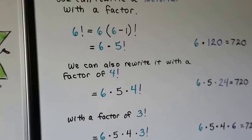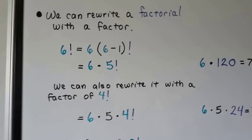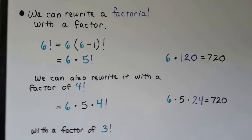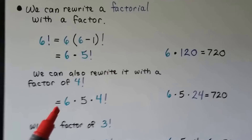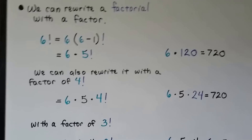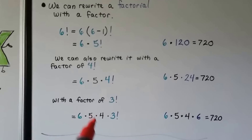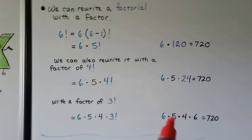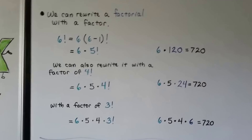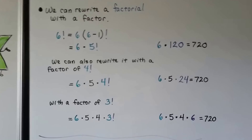So we can rewrite a factorial with a factor. For 6 factorial with a factor of 5 factorial, we just do 6 times 5 factorial, which equals 6 times 120, equal to 720. We can rewrite it with a factor of 4 factorial: 6 times 5 times 24, which also equals 720. We can write it with a factor of 3 factorial: 6 times 5 times 4 times 3 factorial, meaning 6 times 5 times 4 times 6, which is also equal to 720. So even with writing it with a factor, it's still going to equal the same thing.